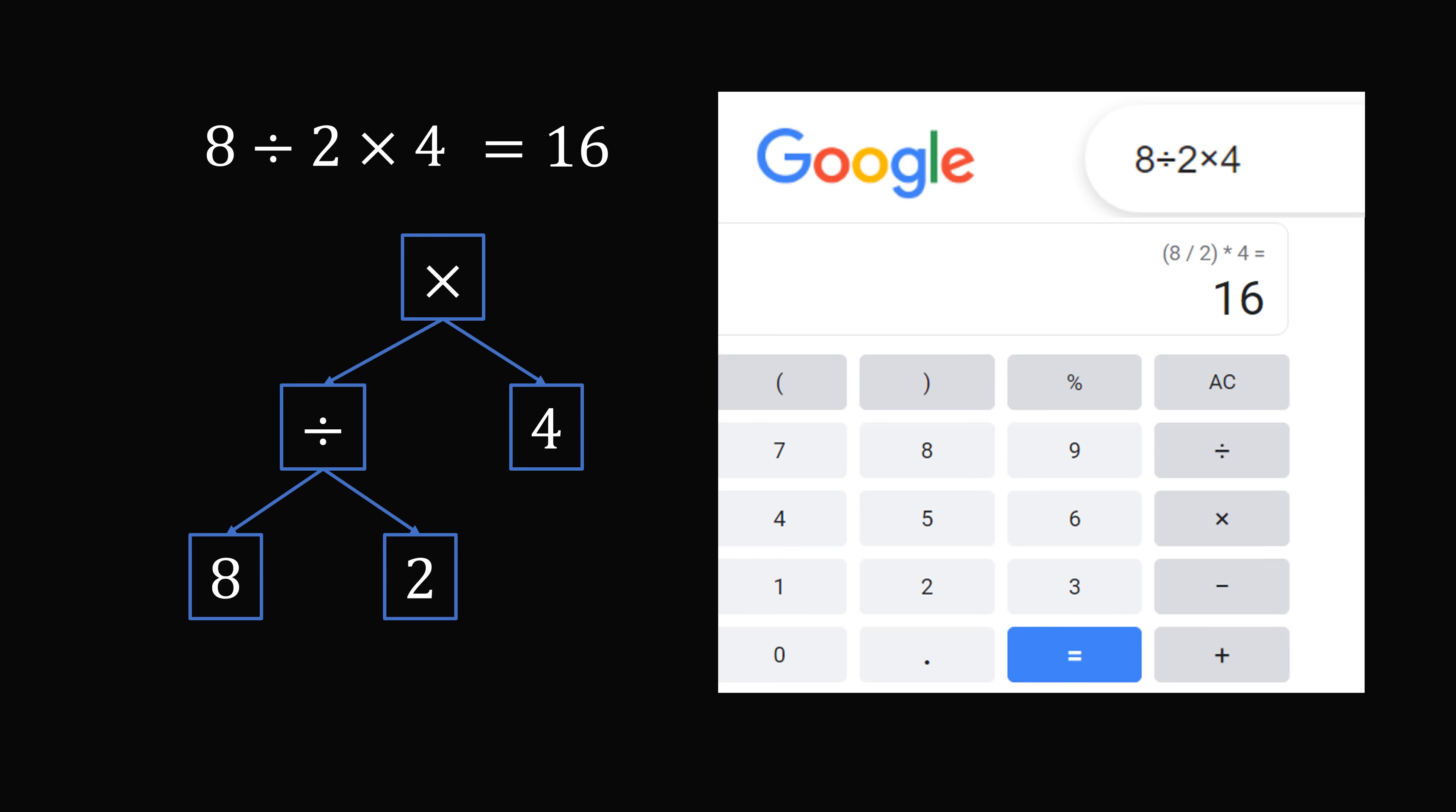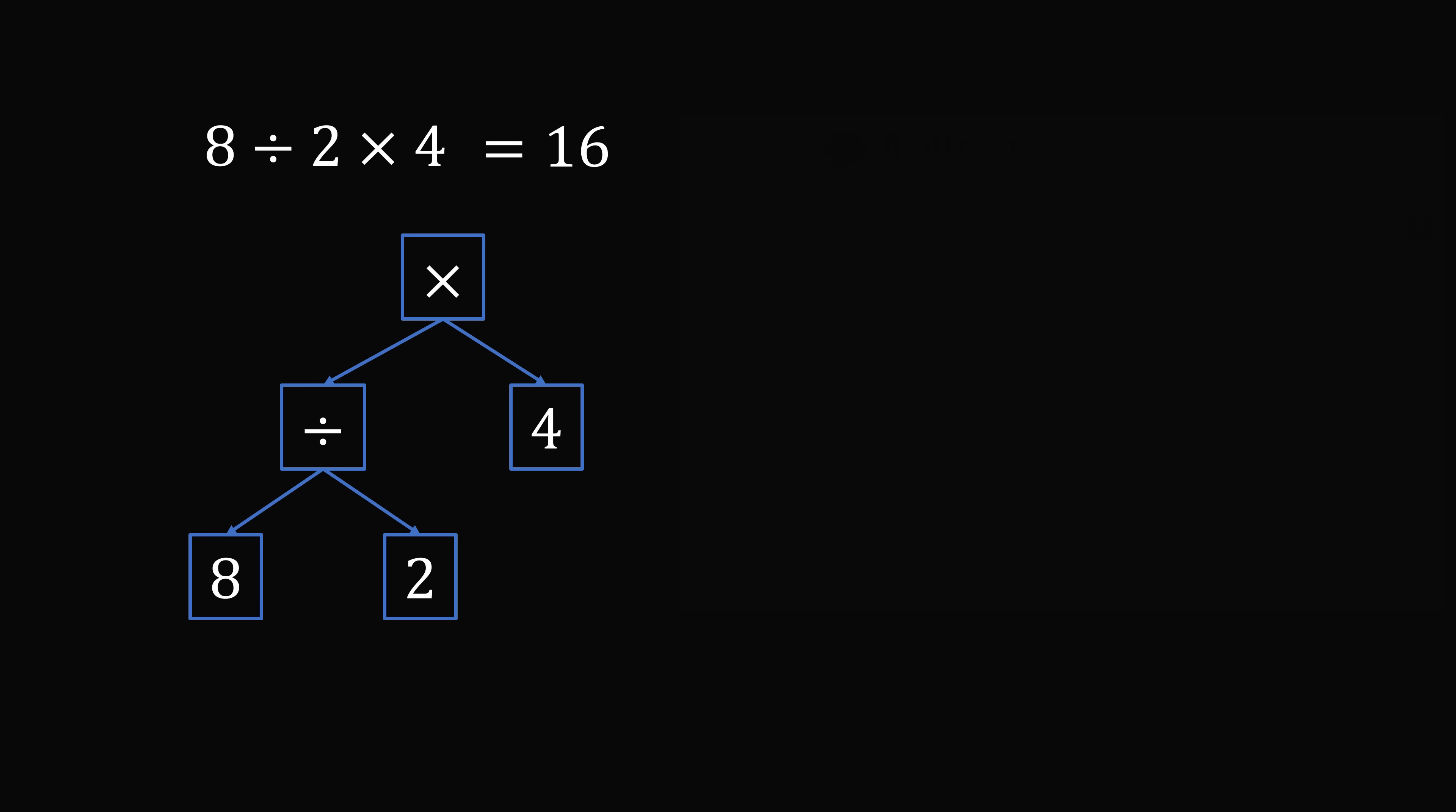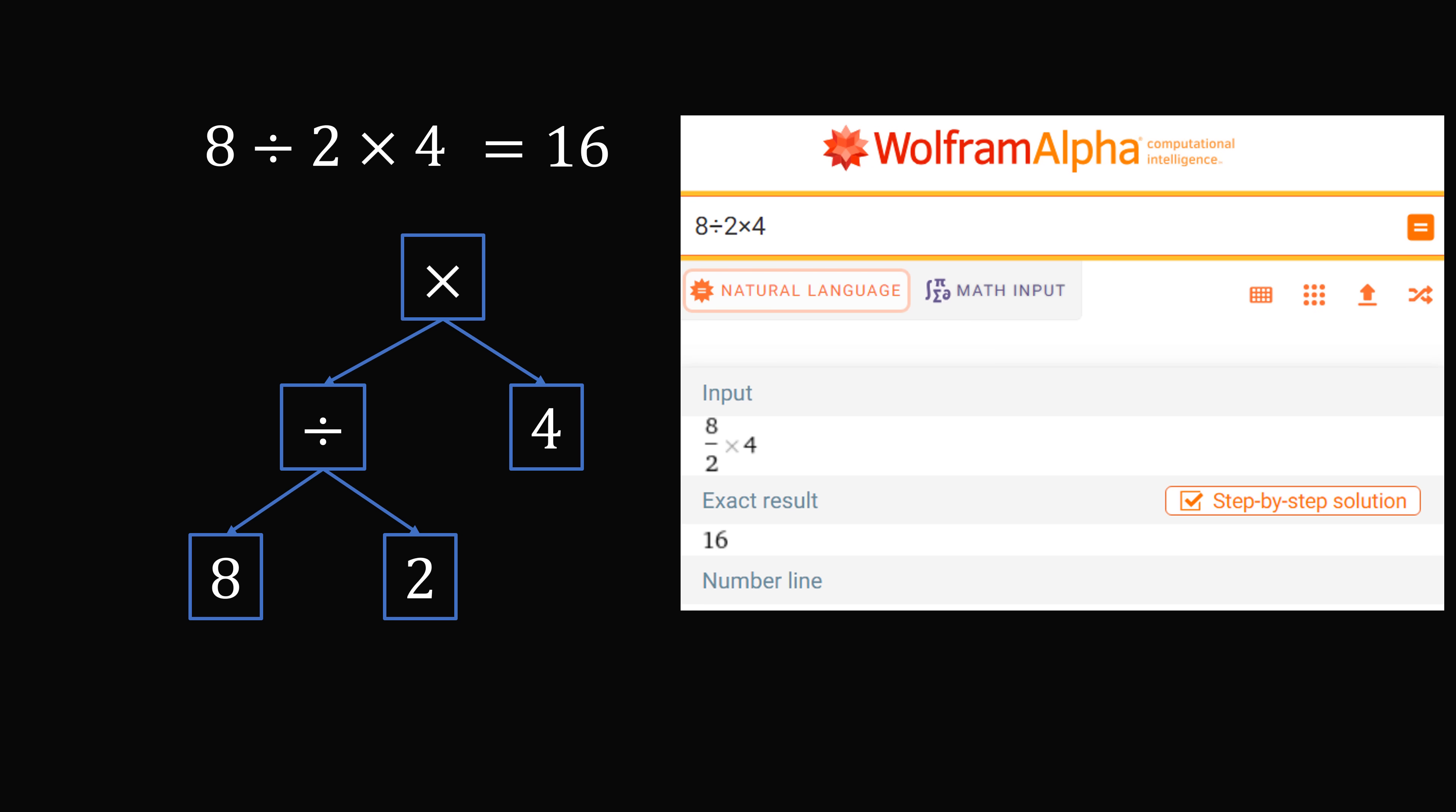So if you input this into Google, it will say the answer is 16, and it will actually parse it out as 8 divided by 2 first, then multiplied by 4. It will use this binary expression tree. Wolfram Alpha, which usually gets calculations correct, also gives the answer of 16. People who say 16 is the wrong answer might wonder why are these calculators giving it. Well, there is a convention, and that's the reason they do give it.